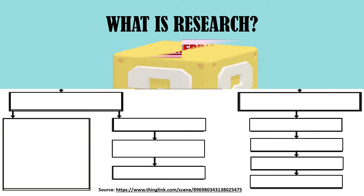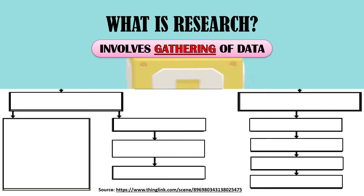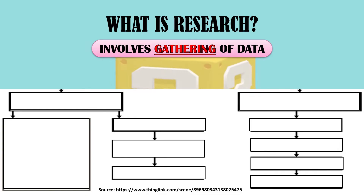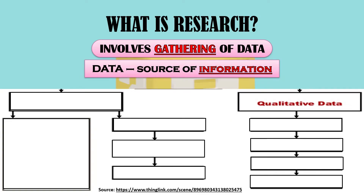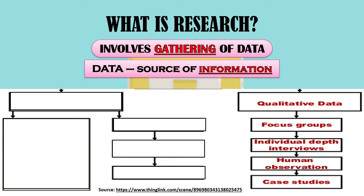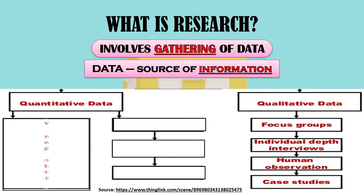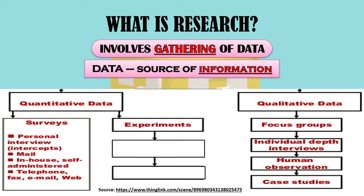Another characteristic of research is that it involves gathering of data. Whether you're conducting a qualitative or quantitative research, it would always involve gathering of data because data is considered to be a source of information which would allow researchers to yield answers to their research questions. For qualitative research, we have qualitative data which can be gathered through focus group discussions, in-depth interviews, human observation, or case studies. In quantitative research, we have quantitative data which can be gathered through surveys, experiments, mechanical observations, or simulations.